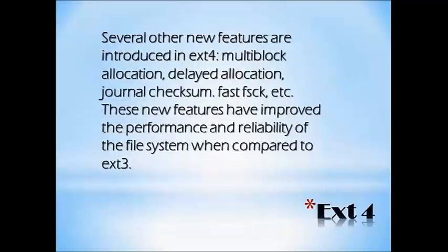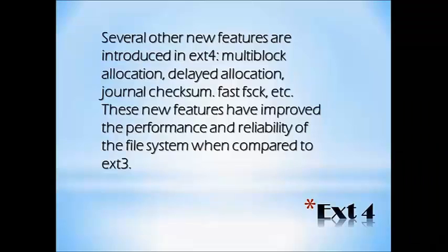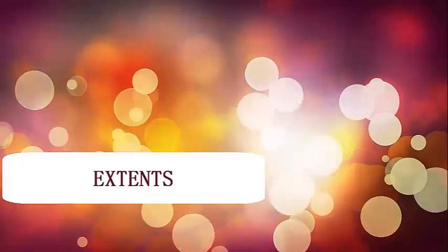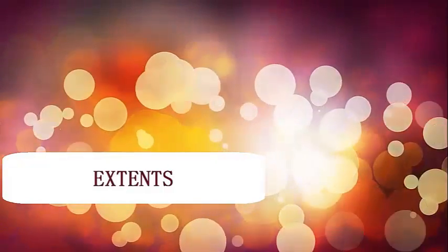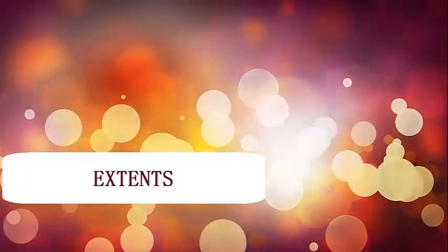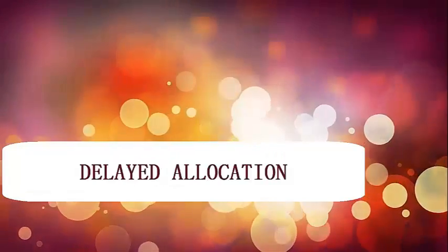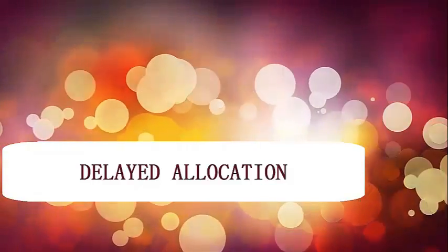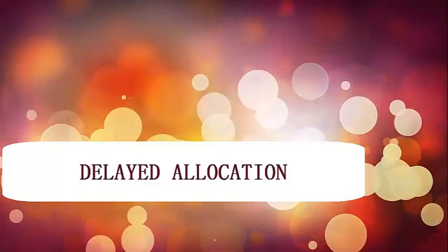EXT4 is a much better version, as several new features have been introduced: multi-block allocation, delayed allocation, journaled checksum, and fast FSCK. These new features have improved the performance and reliability of the file system. Extents are ranges of contiguous memory blocks; large files are stored in extents, which reduces time delay in deleting large files. Delayed allocation is a performance feature that ensures memory is allocated to the file when it is ready to be written back.